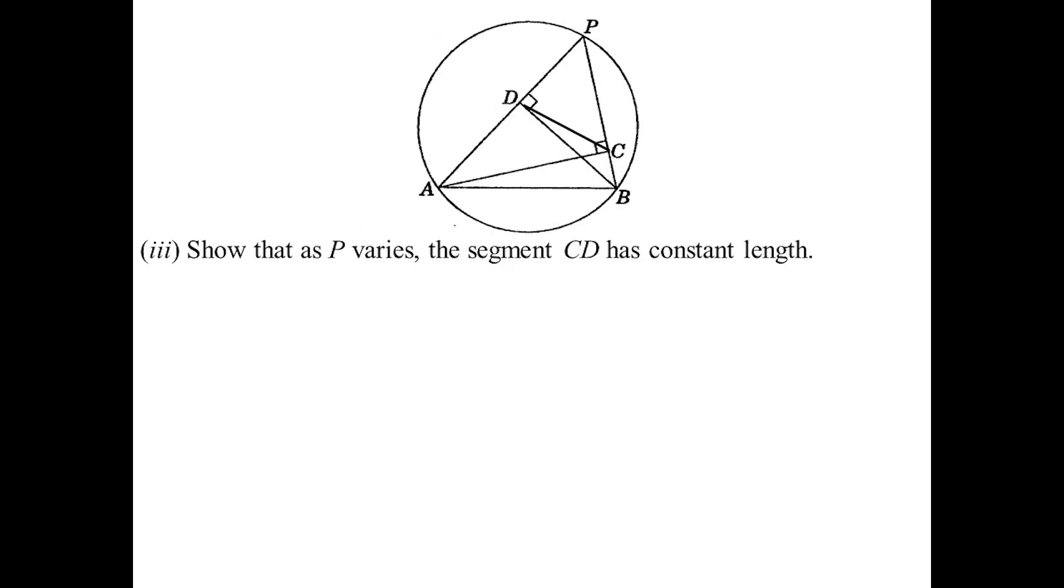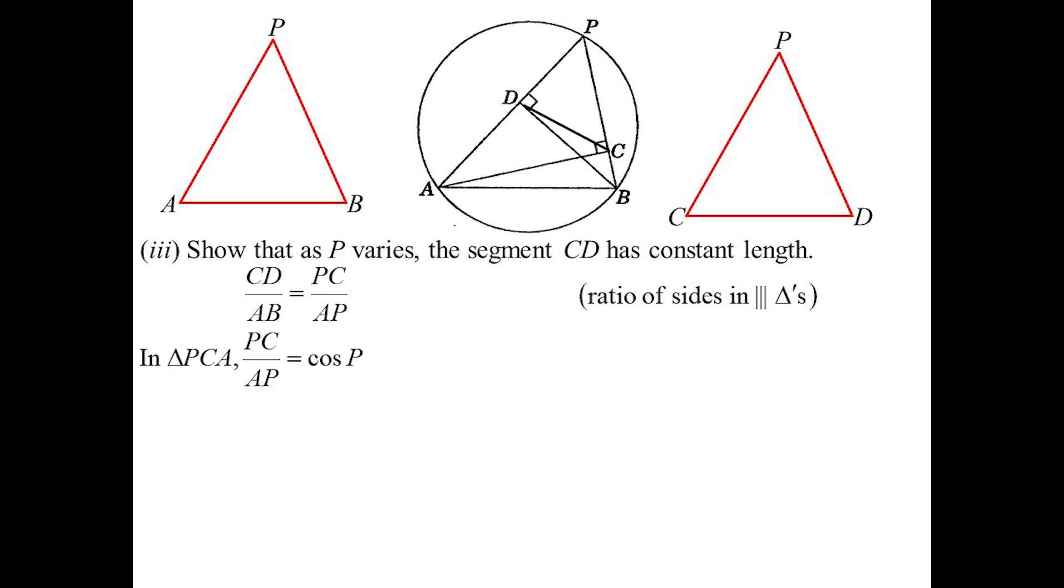As P moves, CD will be of constant length. There's the two similar triangles - I thought I'd draw them because I figure they got me to show they're similar, I'm probably going to use this. Ratio of sides: CD, that's the one we're trying to show has constant length, would correspond to AB in the other similar triangle. That's going to be the same as PC over AP, ratio of sides in similar triangles. In triangle PCA, which we know is a right-angle triangle, PC over AP would be the cosine of angle P, so therefore CD over AB must also equal the cosine of P.